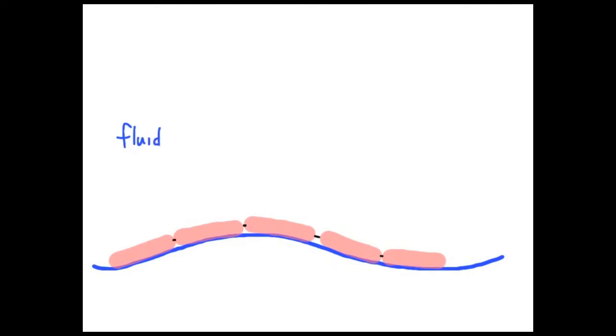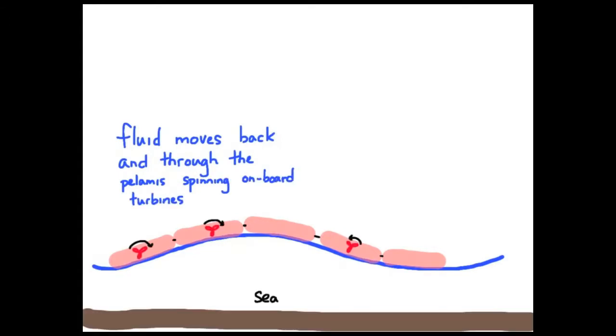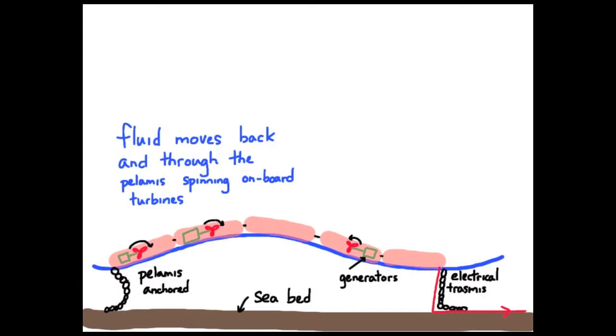So here's a diagram of a pelamis. Again, several sections snaking through the water. There is fluid inside that runs through the turbines, spinning them, creating electricity. The pelamis is anchored to the seabed, of course. And transmission wires back to the shoreline, transmitting the generated electricity.